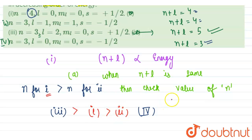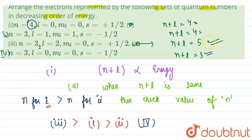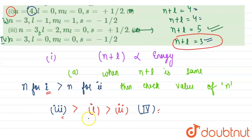So as we can see, the one with the highest n plus l value, which was 5 and that was in third, so it has the highest energy. The least energy was for fourth because it has the lowest n plus l value, 3. And in first and second, since there was a tie in n plus l value, we check the n value and n value is higher for first, that means it will have higher energy.